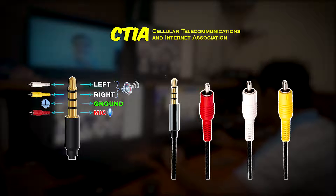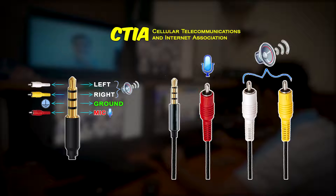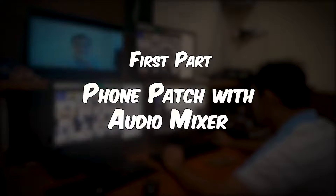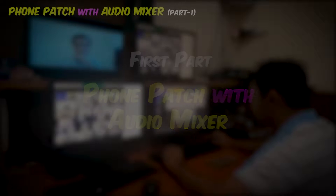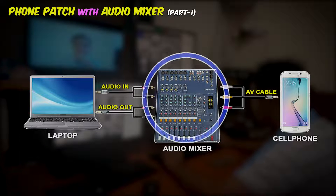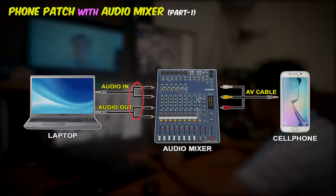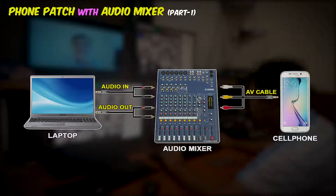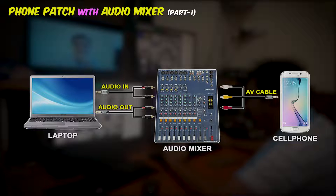Since we already identified our AV cable configuration and it matched with our headphones, let us go now for the first part of this tutorial, which is the phone patch connection with the audio mixer. The materials we are going to use will be laptop, audio mixer, and cell phone. We also have audio cables and AV cable. The laptop is connected to the audio mixer using audio cables, while the cell phone is connected to the mixer using AV cable.